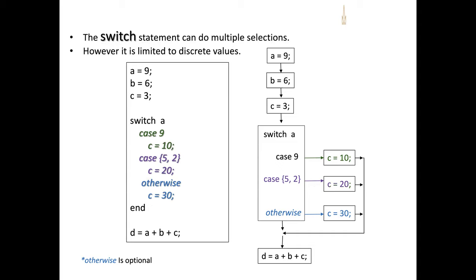The switch statement can also be used for multiple selections, where a single case considers more than one value. This is done using brackets. If we wanted to evaluate whether A is 5 or 2, that's the syntax we use. If it is 5 or 2, C would be assigned 20; otherwise, C is assigned 30.